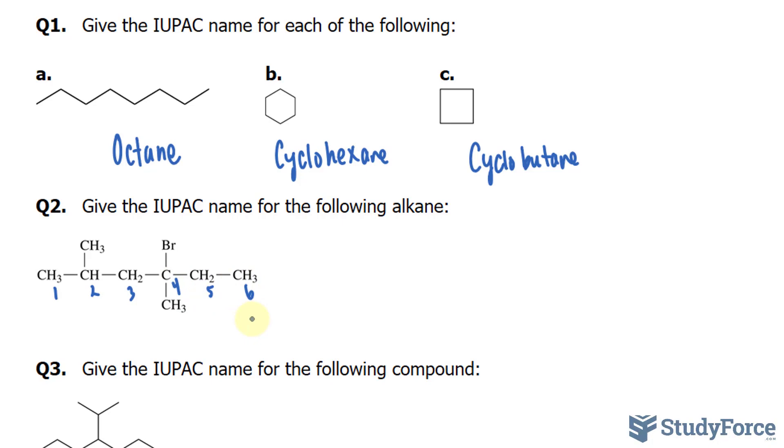The next step is to give the location and name for each substituent in alphabetical order, as a prefix to the name of the main chain. In this molecule, the substituents are bromo and methyl. And given that B starts before M in the alphabet, we write down bromo first. And we hyphenate the carbon number where the bromo is connected to. So the bromine here is connected to the fourth carbon. We write down 4-bromo.